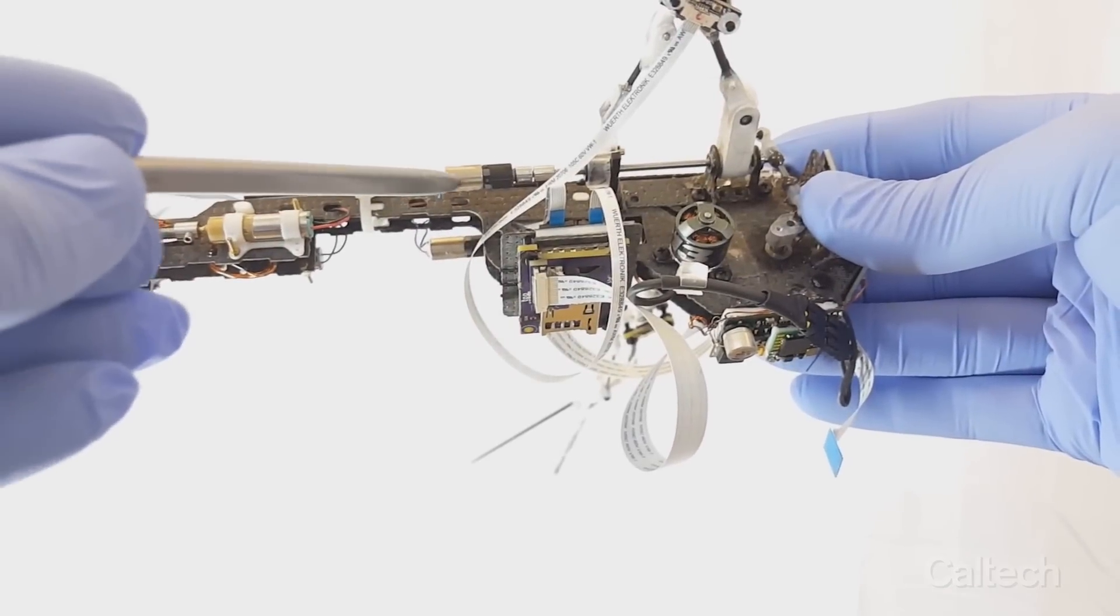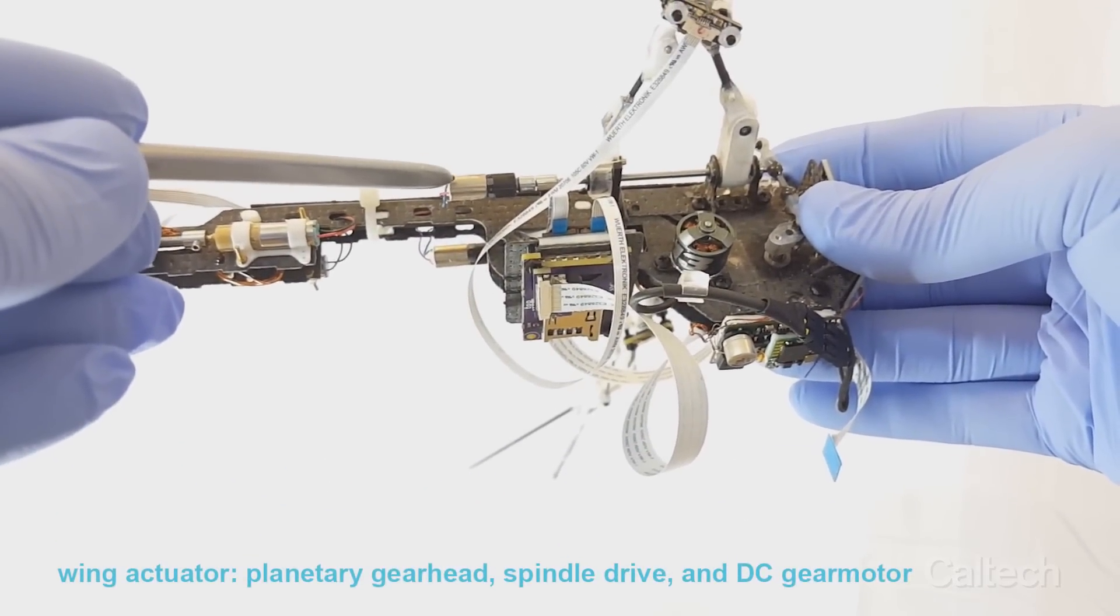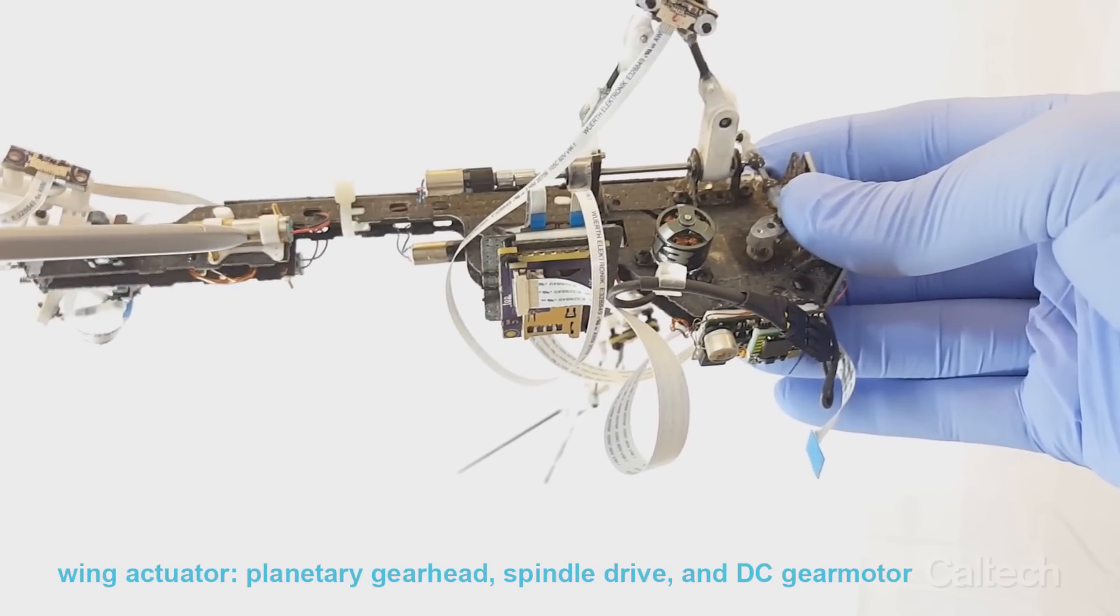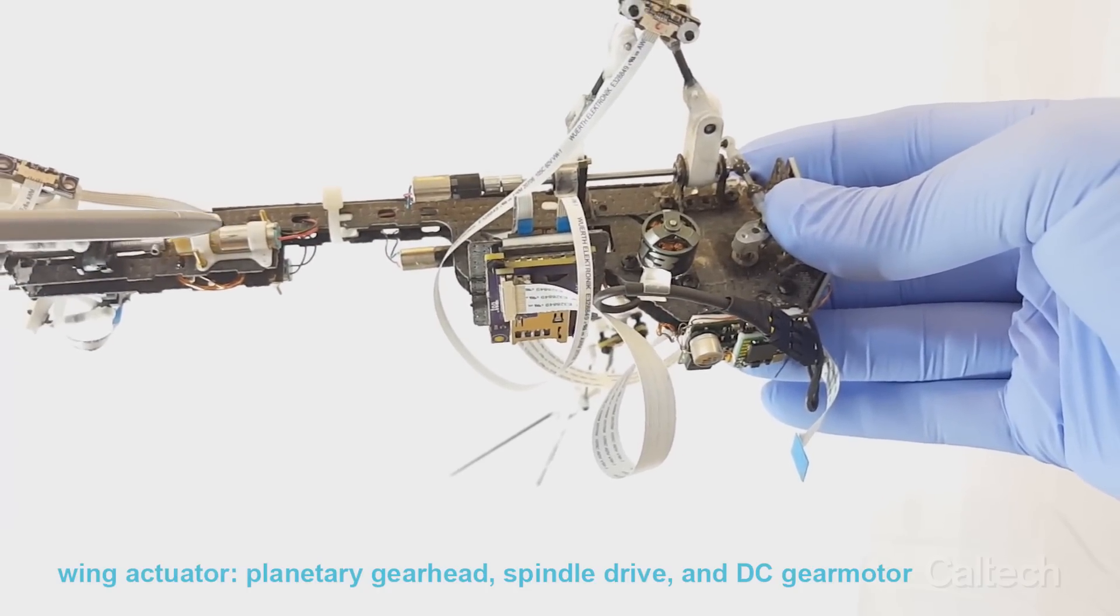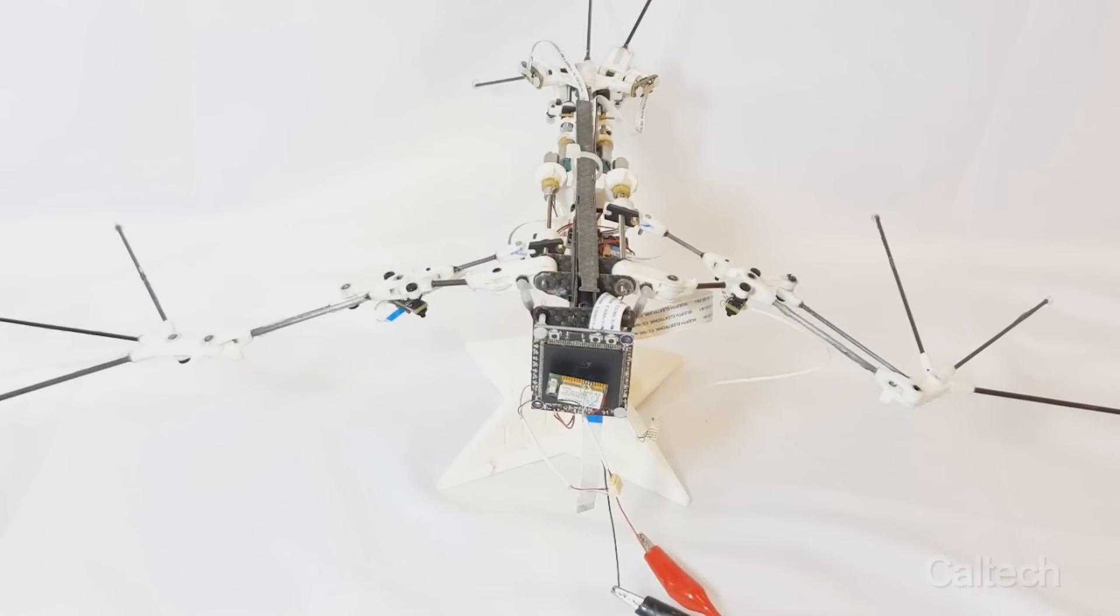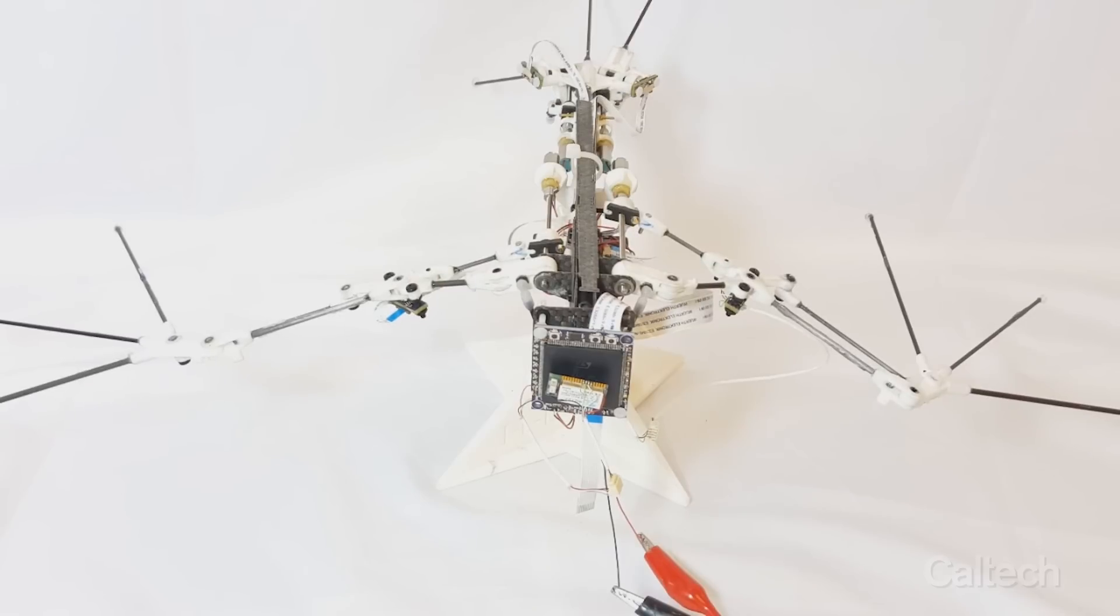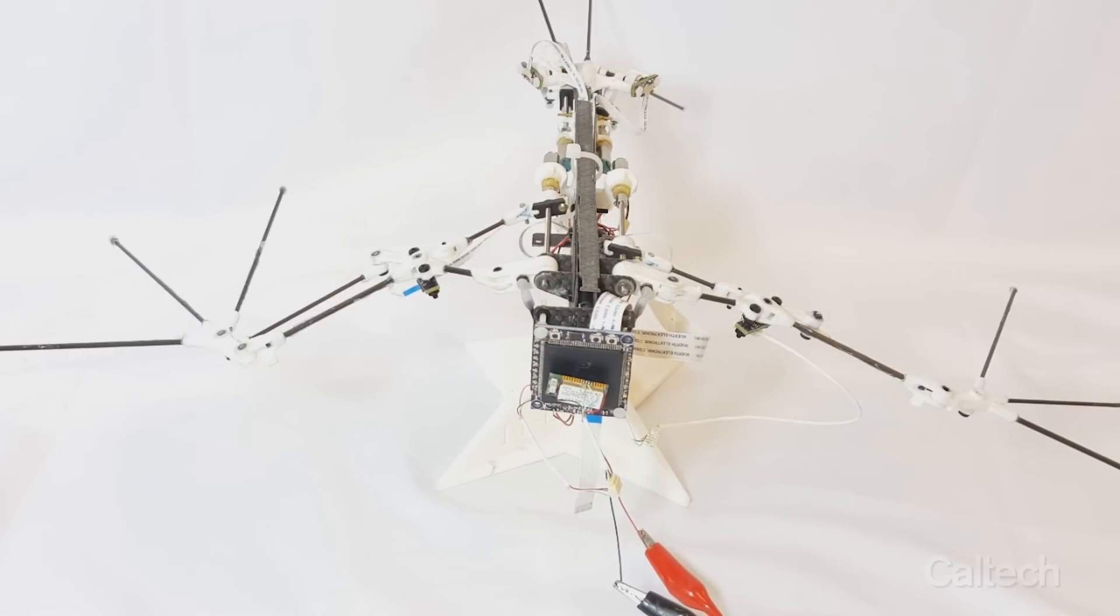Each wing actuator, which is composed of a planetary gear head, a spindle drive, and DC gear motor produces the required linear motion. We have identified five dominant motions of bat flight and implemented those into the design of B2.